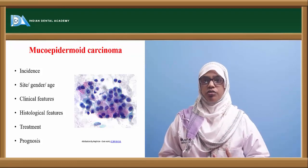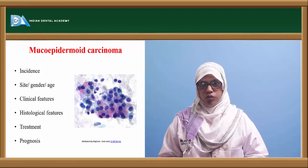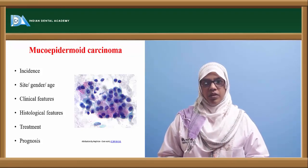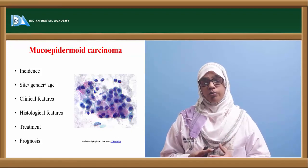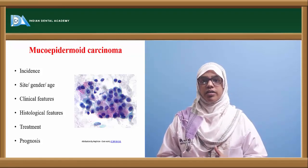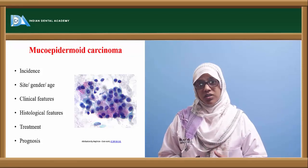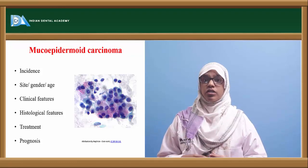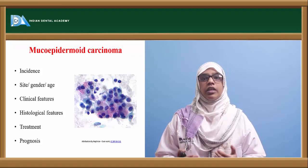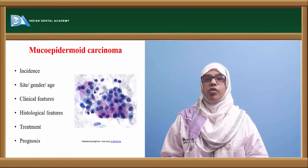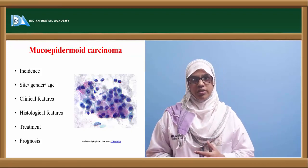High grade mucoepidermoid carcinoma also shows significant tissue destruction, disfigurement, and facial nerve damage. Histologically, mucoid cells are present. Treatment is surgical excision with a wide margin. The prognosis requires careful attention as the chances of recurrence are very high. It has the potential to metastasise to the lungs or distant parts of the body like long bones. Radiation therapy can also be opted in this case.